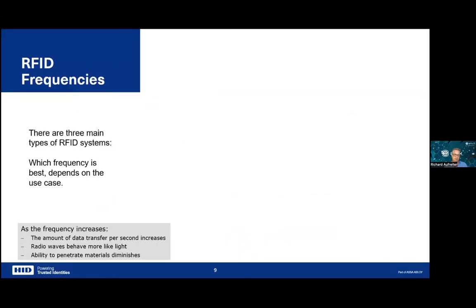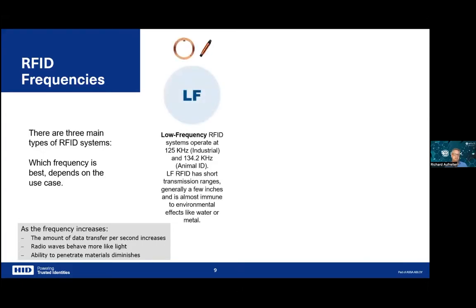As frequency increases, data throughput increases and tags become faster. Radio waves behave more like light at higher frequencies — in UHF you get reflection and dampening issues. The ability to penetrate materials also diminishes. LF tags are very immune to materials, especially water, and can even be read through metal. A very common use case for LF is animal ID. Read range is up to about half a meter.